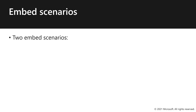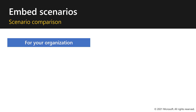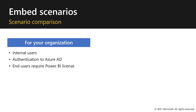There are two distinctly different embed scenarios: For Your Organization and For Your Customers. In this course, we'll be emphasizing the For Your Customers scenario, but let's start by first describing the For Your Organization scenario. The For Your Organization scenario is used for embedding for internal users. Your users will authenticate to Azure AD. This means that end users do require a Power BI license, and that the authentication flow is interactive. Lastly, keep in mind that this is also known as user-owned data.